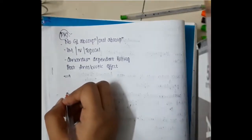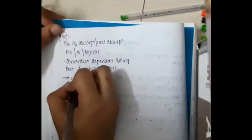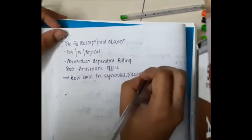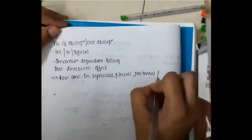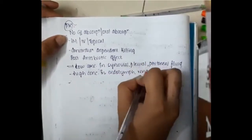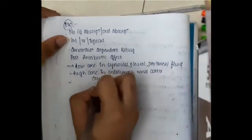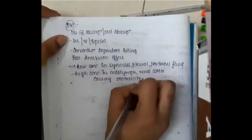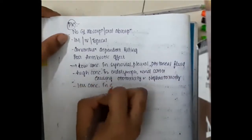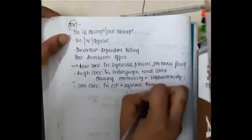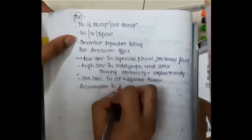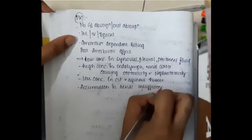Aminoglycosides are present in higher concentrations in endolymph and the renal cortex, causing ototoxicity and nephrotoxicity respectively. They have less concentration in cerebrospinal fluid and aqueous humor. These drugs accumulate in renal insufficiency and decrease GFR.